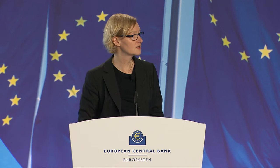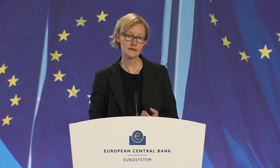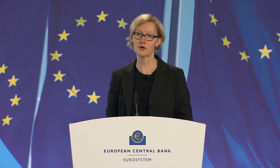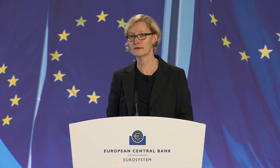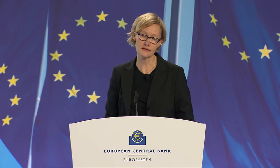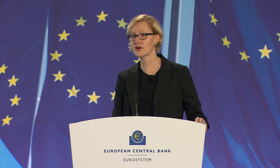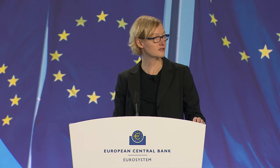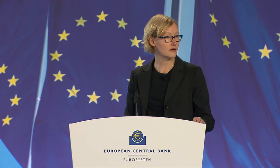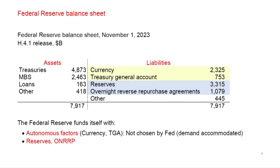Quick recap of the moving parts of the Fed's balance sheet. On the asset side, Treasuries and MBS are the main ones; loans are relatively small — unlike the ECB, which historically supplied more of its reserves through lending to banks. On the liability side, the Fed funds its assets with the autonomous factors — currency and the Treasury General Account — and then with interest-bearing liabilities: reserves, which are banks' checking accounts with the Fed, and the overnight reverse repo facility, which are investments by non-banks such as money market funds.